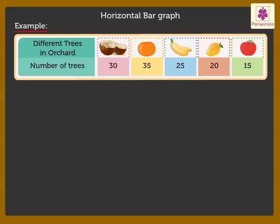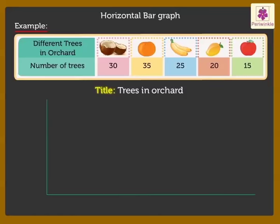Step 1: Write a title explaining what is being represented. Step 2: Draw the horizontal and the vertical axis.